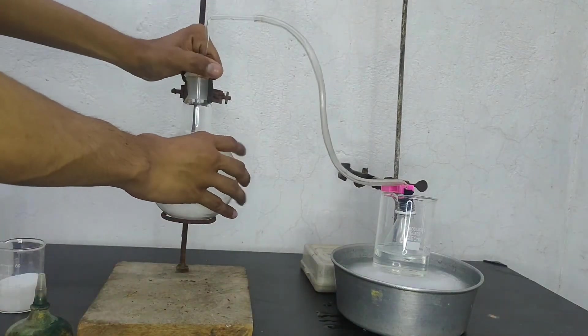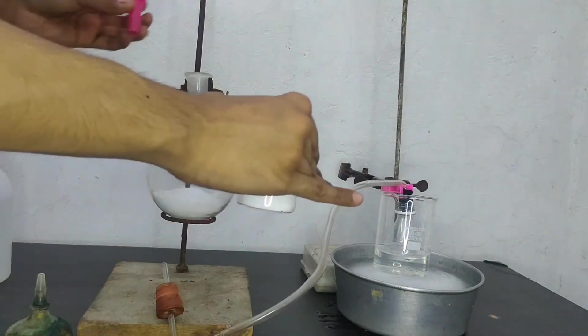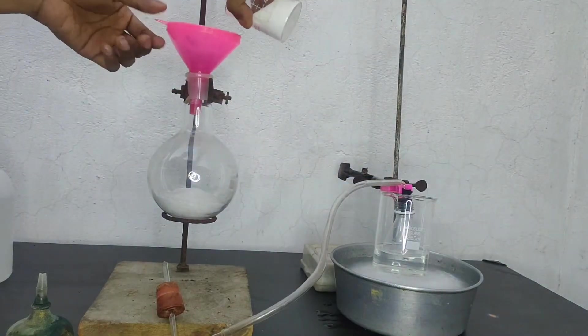Now, to this potassium bisulphate, I will be adding 60 grams of table salt, that is sodium chloride.